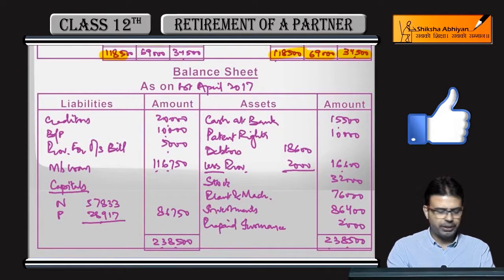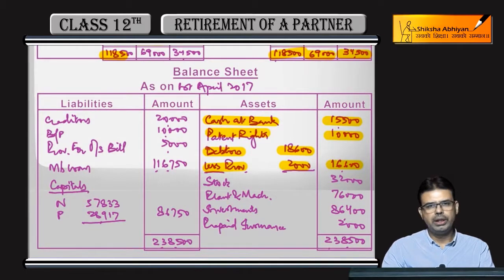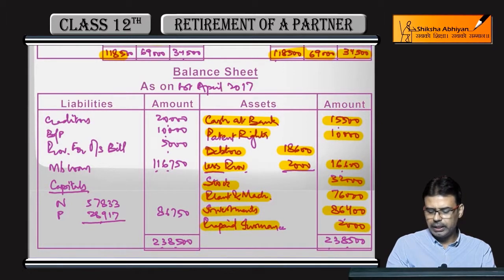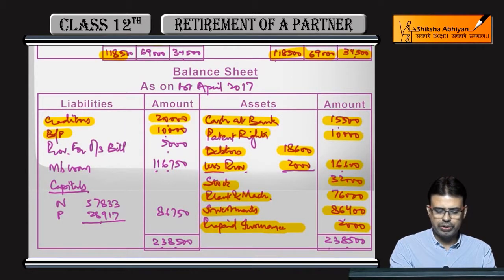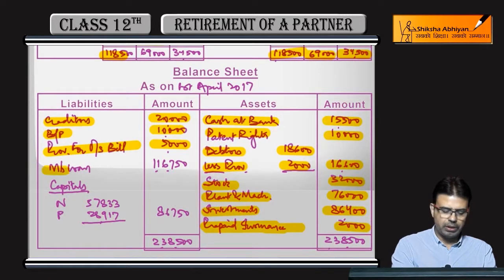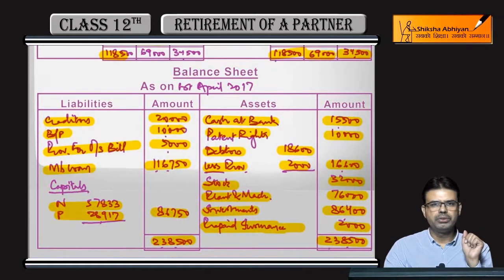Balance sheet after M's retirement: Cash at bank — no change, 15,000. Patent rights — no change, 10,000. Debtors — no change, 18,600. Less provision for doubtful debts increased to 2,000 — net figure 16,600. Stock — no change. Plant and machinery — no change. Investment — 86,400. Prepaid insurance shown as asset — 2,000. Creditors — no change. Bills payable — no change. Outstanding bills for repair — 5,000. M's loan shown separately. Capital of N and P shown. This was a simple question focused on Investment Fluctuation Fund treatment — got it, done.